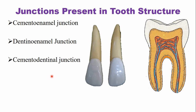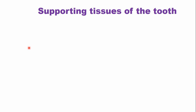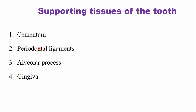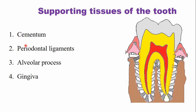Another junction is the cemento-dentinal junction. The root dentine is covered by cementum — this thin layer of cementum is normally present on the root dentine. The interface where the cementum and dentine are attached with each other is known as the cemento-dentinal junction. The human teeth are attached to the bone with the help of a specialized fibrous tissue that forms a joint known as the gomphosis. The supporting tissues of the tooth are cementum, periodontal ligament, alveolar process, and the gingiva — all four supporting tissues are known as the periodontium.